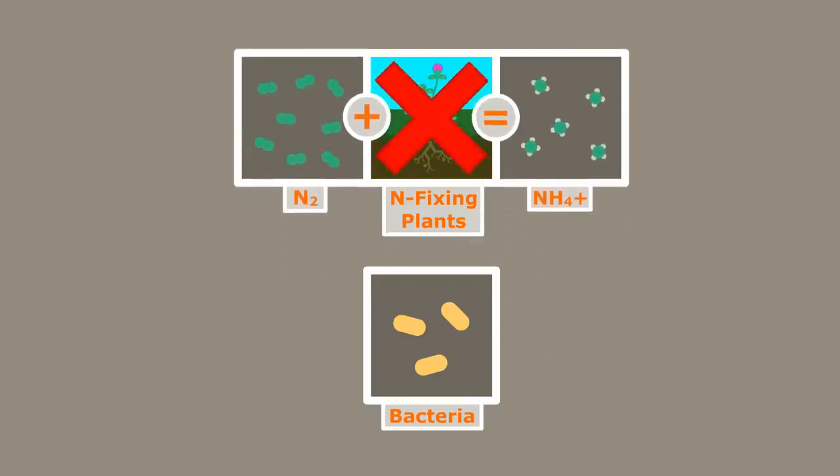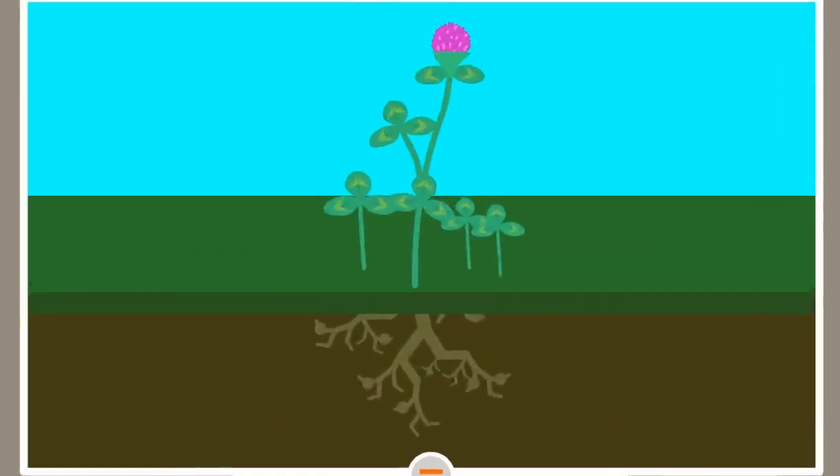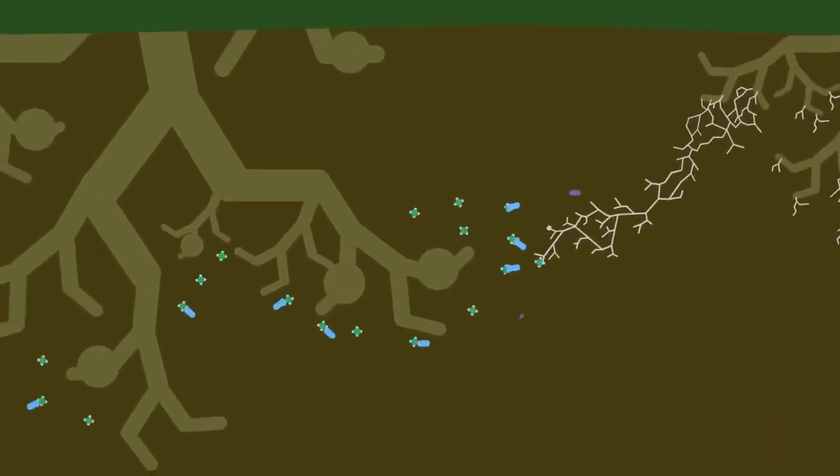Believe it or not, nitrogen-fixing plants don't fix nitrogen. Rather, they create habitat for the bacteria that do. The roots of this clover plant have little nodules that house huge amounts of nitrogen-fixing bacteria. The ammonium that these bacteria create slowly releases into the soil for neighboring plants and microorganisms to use.